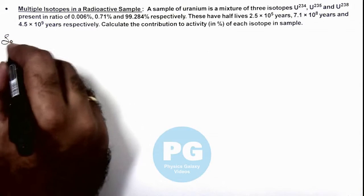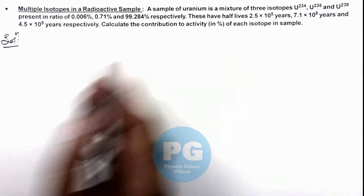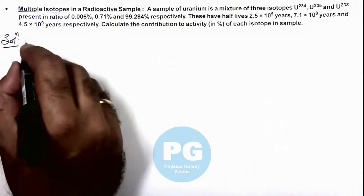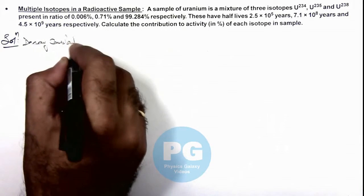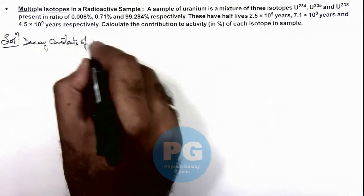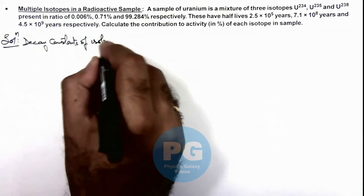So in solution here, you can see first we can write down the decay constant of each isotope. So here we can write decay constants of isotopes are: